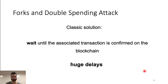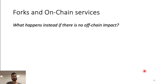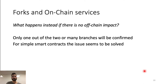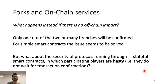So our question now is: what happens instead if there is no off-chain impact when sending transactions? Only one out of the two or many branches will be confirmed. So for simple smart contracts, the issue seems to be solved. But what about the security of protocols running through stateful smart contracts?